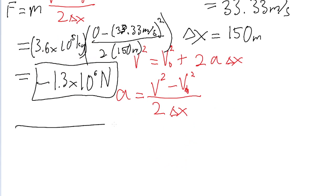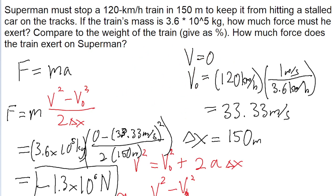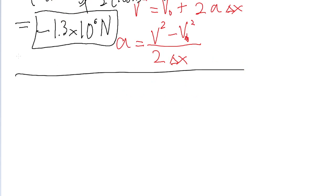Now, the next part of the problem asks for how much, compare the weight of the train, compare the force that we just found to the weight of the train. So we're going to take the force that we just found, so the negative 1.3, and then put it in your calculator, so there's going to be a bunch of other threes, and 10 to the power of 6 newtons.